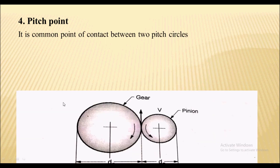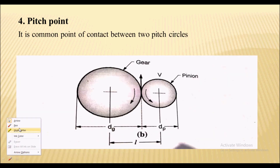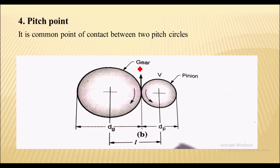Next is the pitch point. Here you can see two gears are in contact. The larger wheel is called a gear and the smaller wheel is called a pinion. The point of contact of the larger gear and the smaller pinion is nothing but the pitch point, which lies between the two pitch circles.